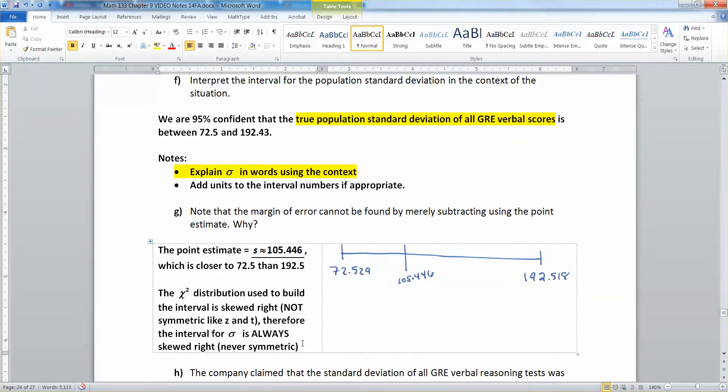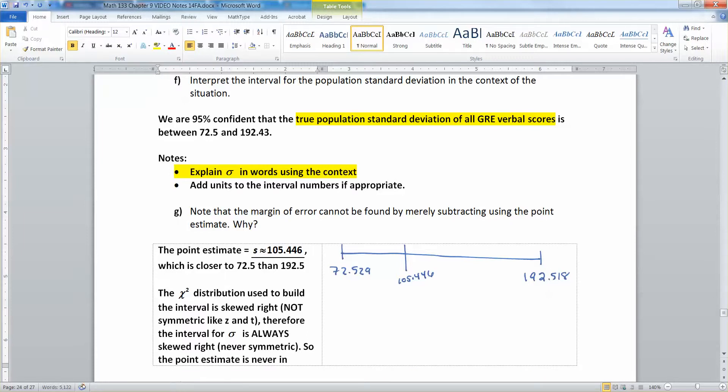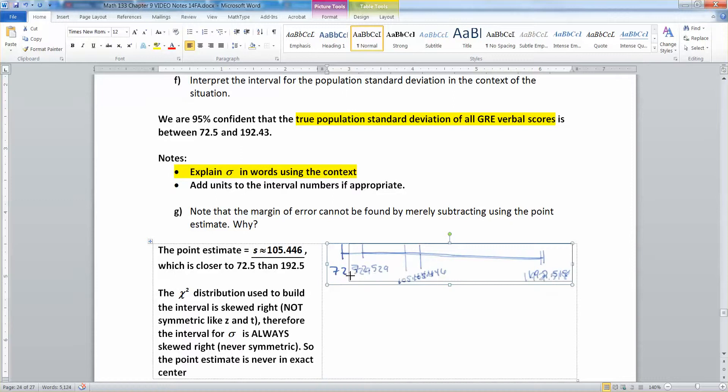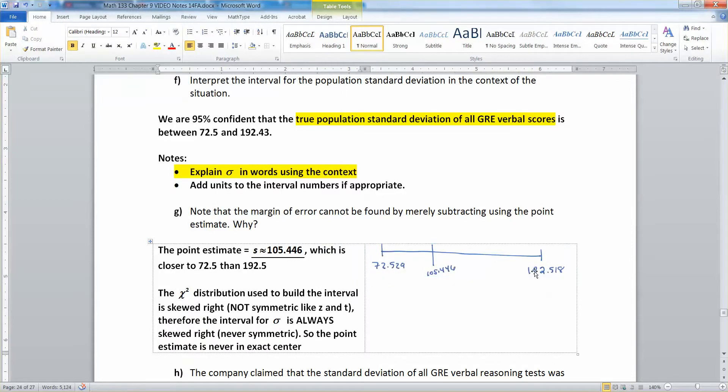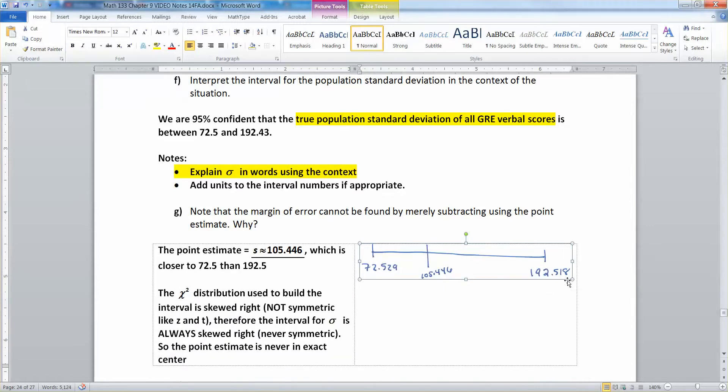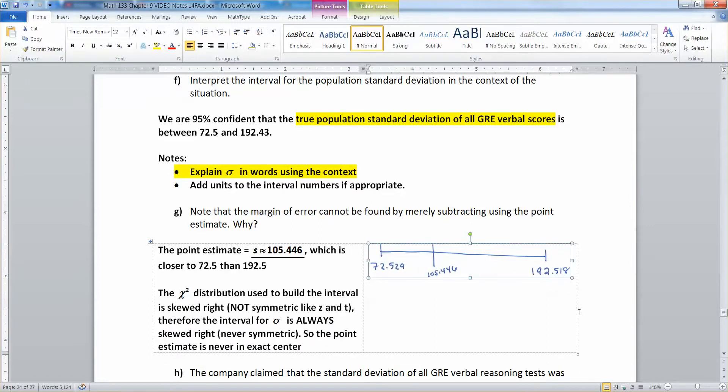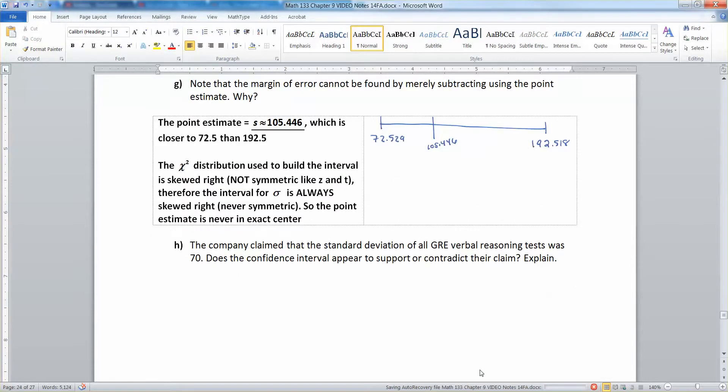So you're never gonna be able to find the point estimate. The point estimate is never in the center. The exact center, let's put it that way. It's in the middle but not the exact middle. It's not right down the center. It's a little bit farther over. And it's always to the left because the distribution is always skewed right that built it.